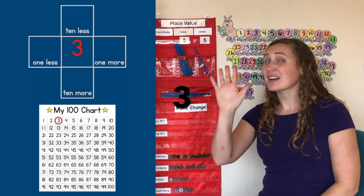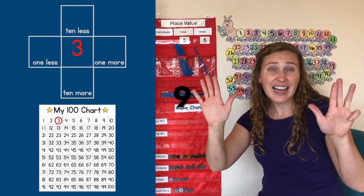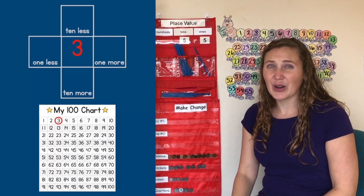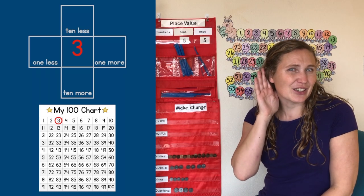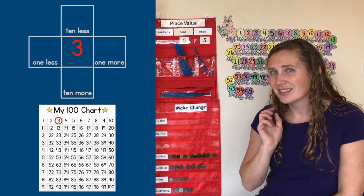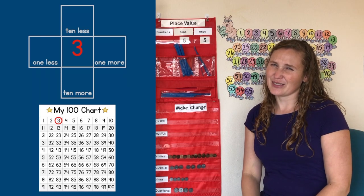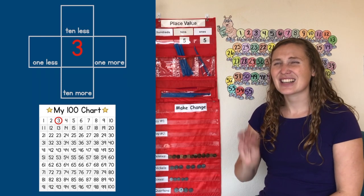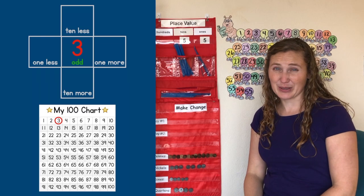One, three, five, seven, nine — I like odd numbers all the time. Did you hear the number? Number three? Is three odd or even? Yes, three is an odd number.